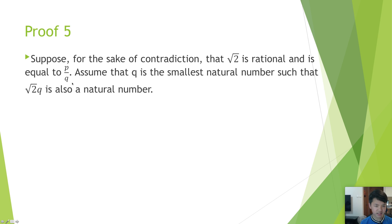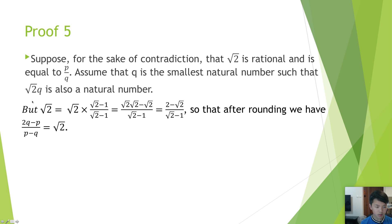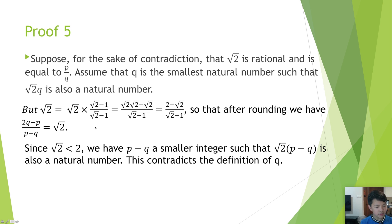Proof 5. Suppose for the sake of contradiction that the square root of 2 is rational and is equal to p over q. Assume that q is the smallest natural number such that the square root of 2 times q is also a natural number. But the square root of 2 equals 2 minus square root of 2 over square root of 2 minus 1, so that we have 2q minus p over p minus q equal to the square root of 2. Since the square root of 2 is less than 2, p minus q is a smaller integer such that the square root of 2 times p minus q is also a natural number. This contradicts the definition of q.